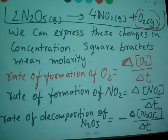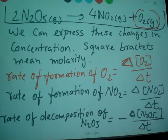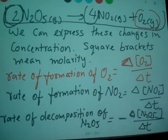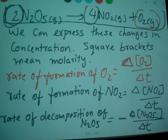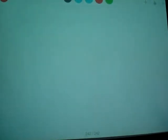Now we are going to relate these expressions by the stoichiometric coefficients. Here you can see 2 moles of N2O5, 4 moles of NO2, and 1 mole of oxygen. We relate these expressions by taking into account the reaction stoichiometry.